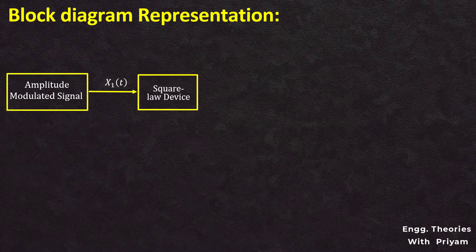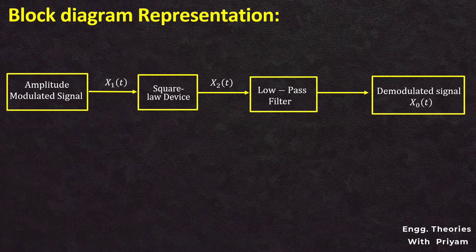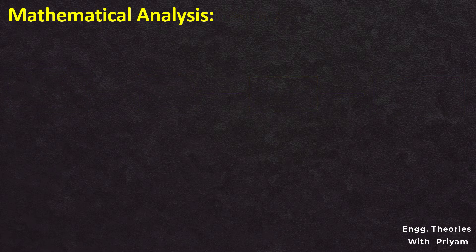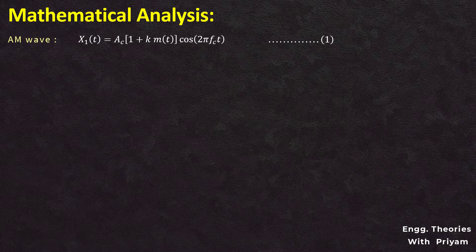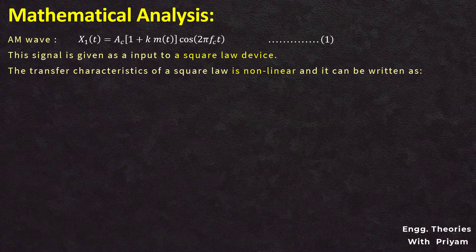The output signal X2(T) from the diode is given as the input to the low-pass filter. After elimination of the higher-order terms, the output is our desired demodulated signal or message signal. The amplitude modulated signal can be written mathematically as: X1(T) = AC × (1 + Ka × m(T)) × cos(2π·fc·T). This signal is given as input to the square law device (diode), whose transfer characteristics are nonlinear and can be written as: X2(T) = K1·X1(T) + K2·[X1(T)]².